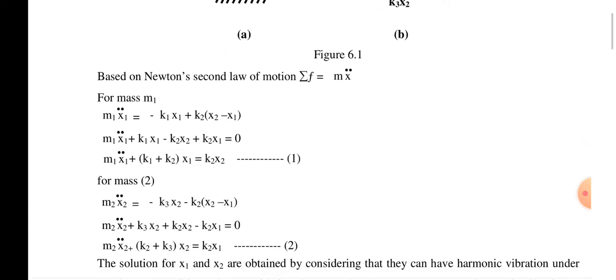Applying Newton's second law, the summation of all forces equals zero at equilibrium. For mass m1: m1·x1̈ = −k1·x1 + k2·(x2 − x1). Rearranging: m1·x1̈ + k1·x1 − k2·x2 + k2·x1 = 0. This is equation number one for mass m1.